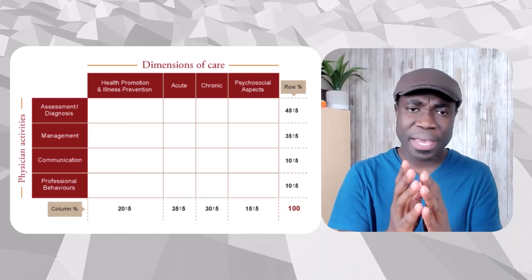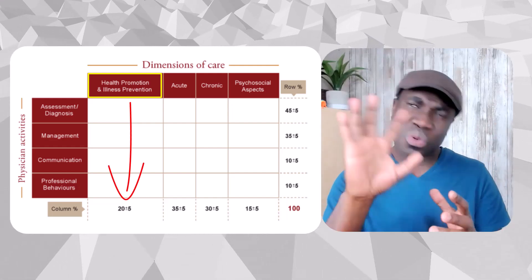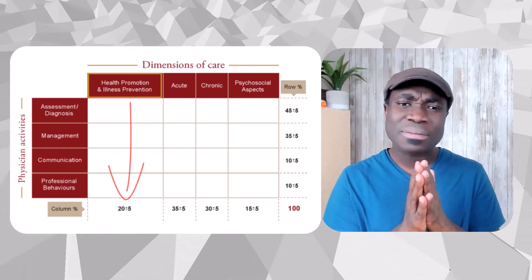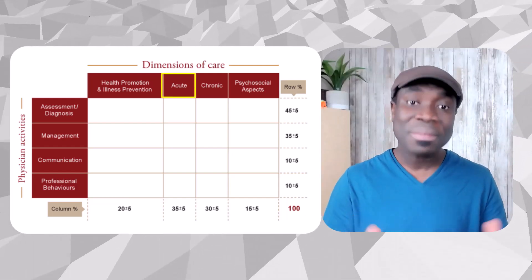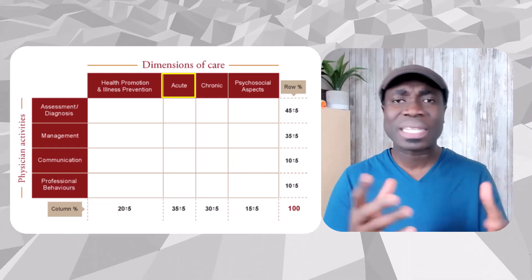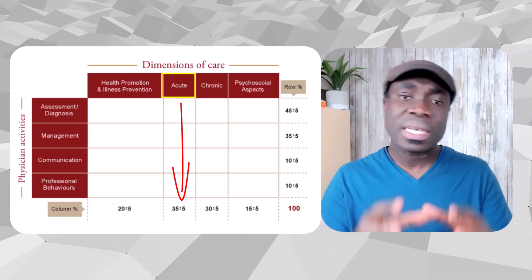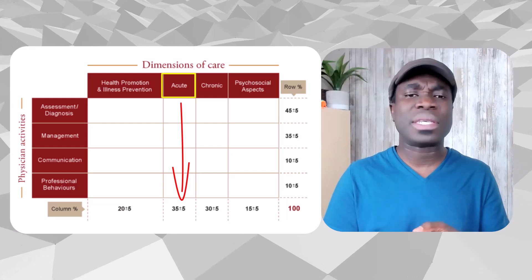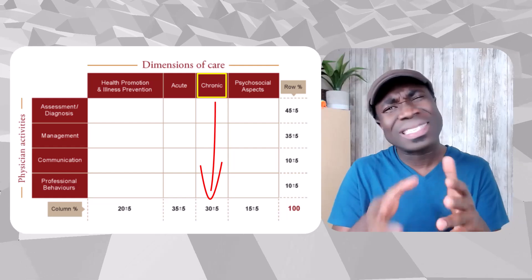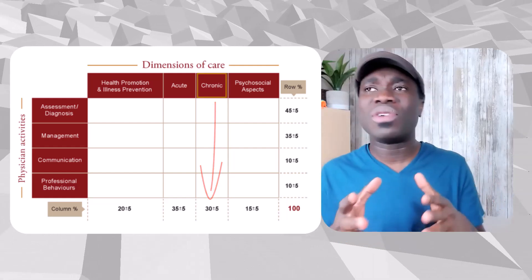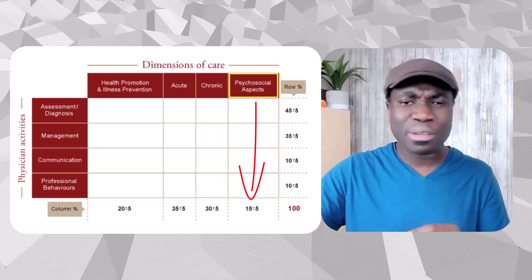For dimensions of care: health promotion covers 20% of questions — approximately 47 questions. Acute illness, which covers how diseases present acutely including emergency medicine, accounts for about 35% — roughly 80 questions. Chronic illness is about 30%, so around 69 questions. And psychosocial aspects account for 15%, about 34 questions.